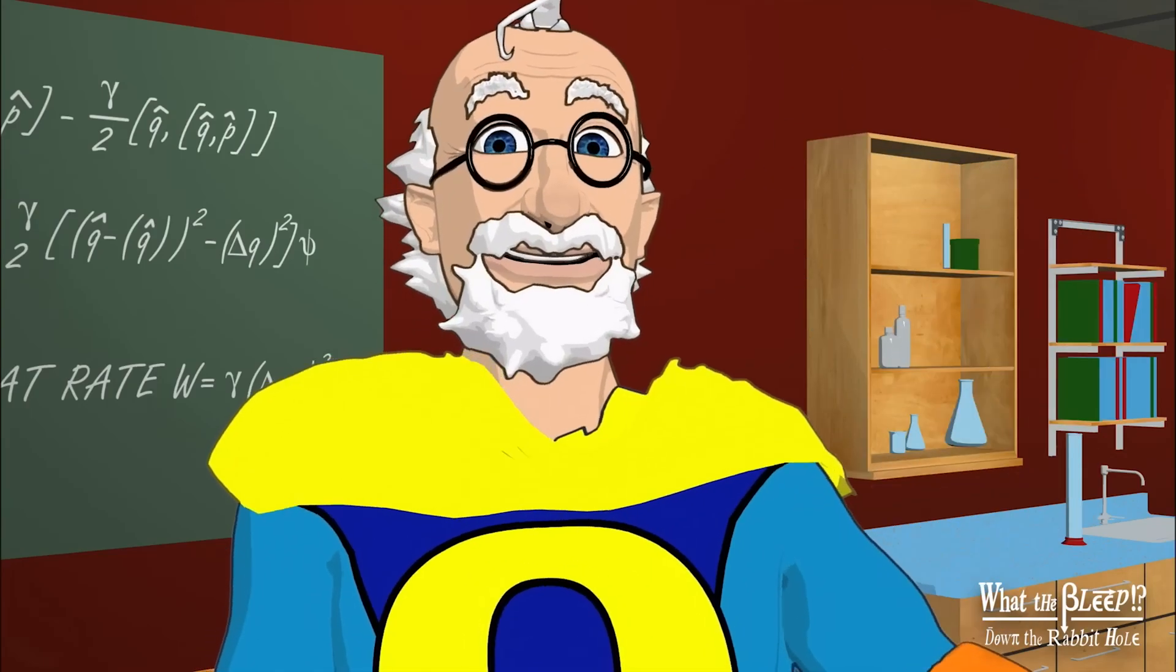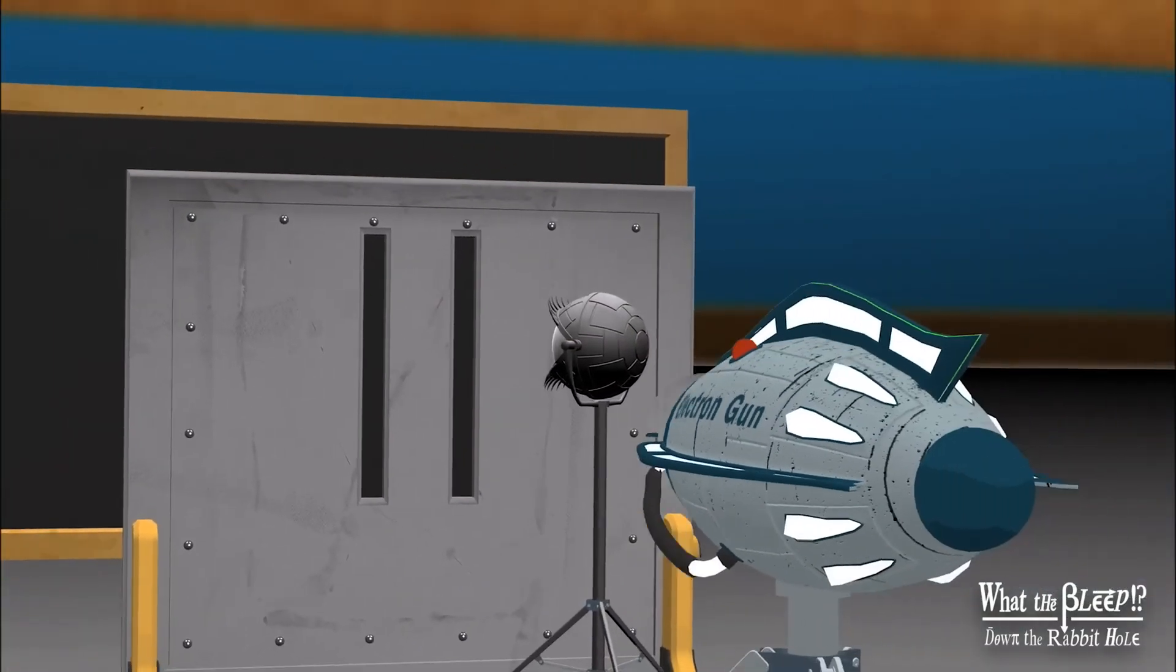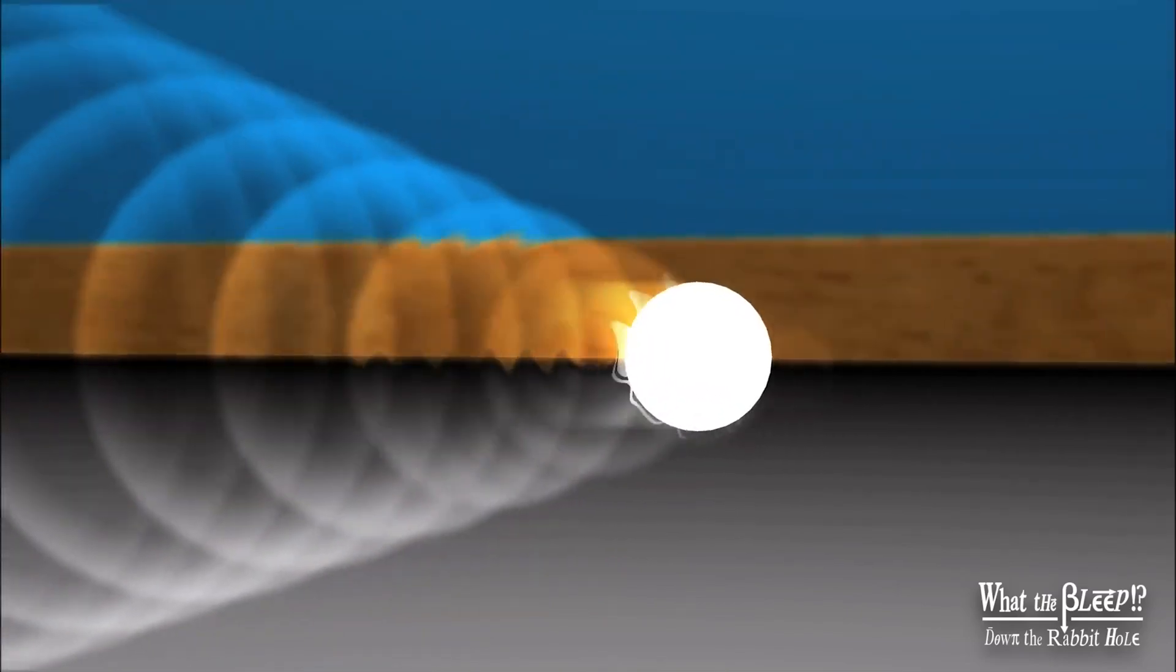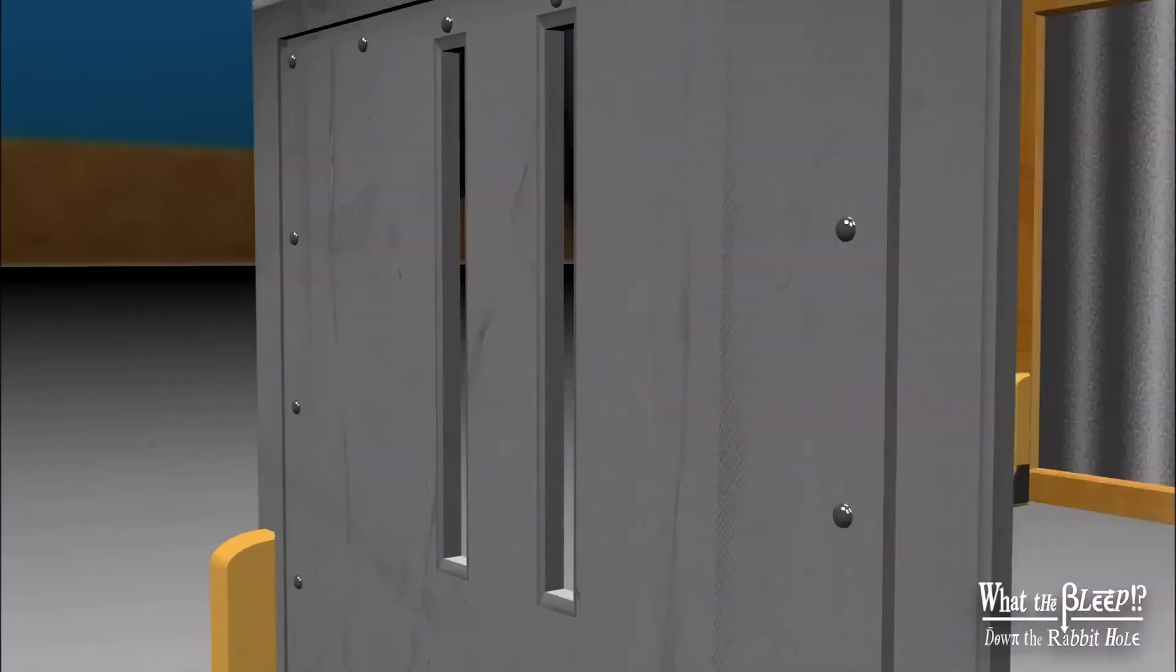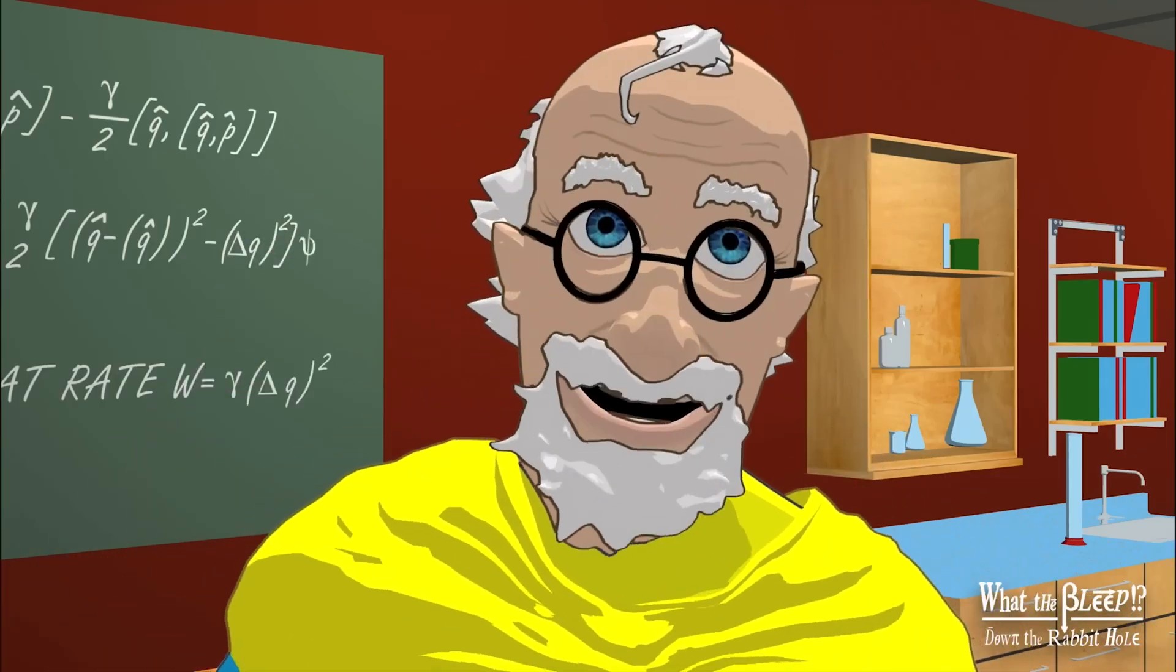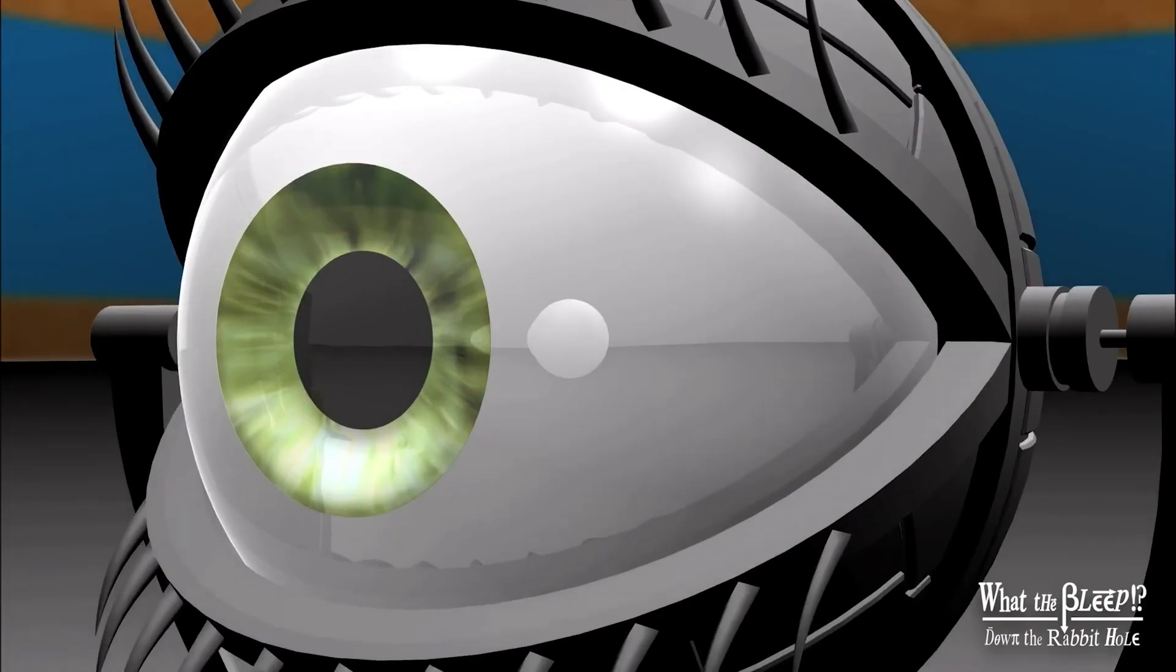But physicists were completely baffled by this. So they decided to peek and see which slit it actually goes through. They put a measuring device by one slit to see which one it went through and let it fly. But the quantum world is far more mysterious than they could have imagined. When they observed, the electron went back to behaving like a little marble. It produced a pattern of two bands, not an interference pattern of many. The very act of measuring or observing which slit it went through meant it only went through one, not both. The electron decided to act differently as though it was aware it was being watched.